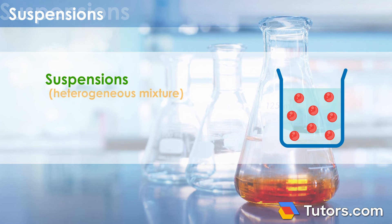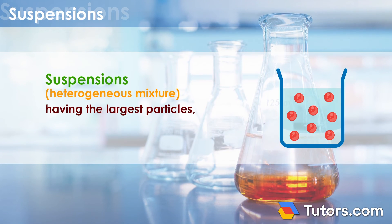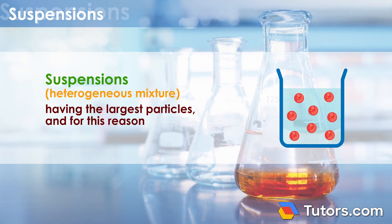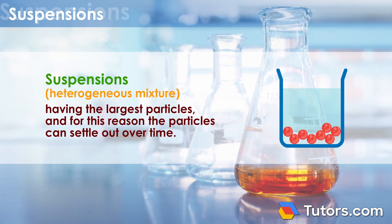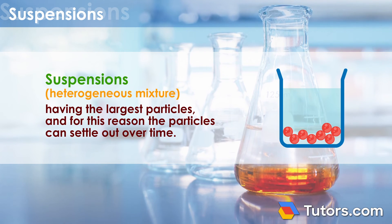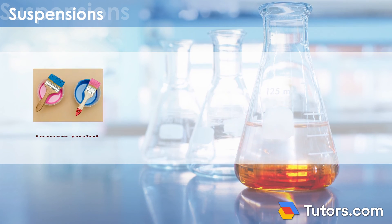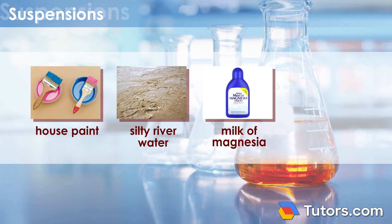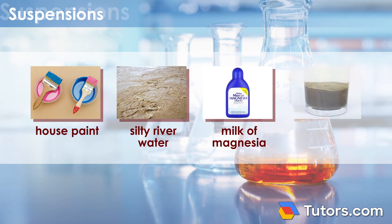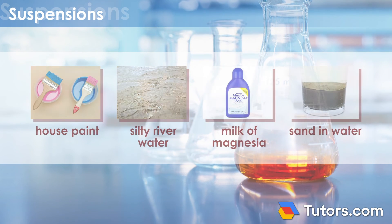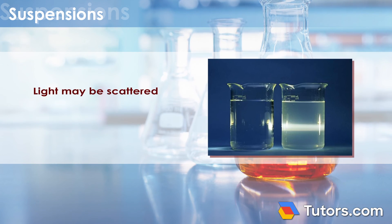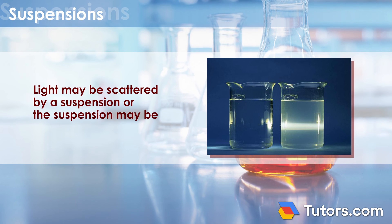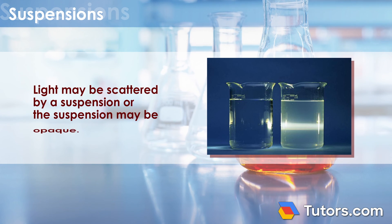Suspensions are heterogeneous mixtures having the largest particles, and for this reason, the particles can settle out over time. Examples of suspensions include house paint, silty river water, milk of magnesia, and sand and water. Light may be scattered by a suspension, or the suspension may be opaque.